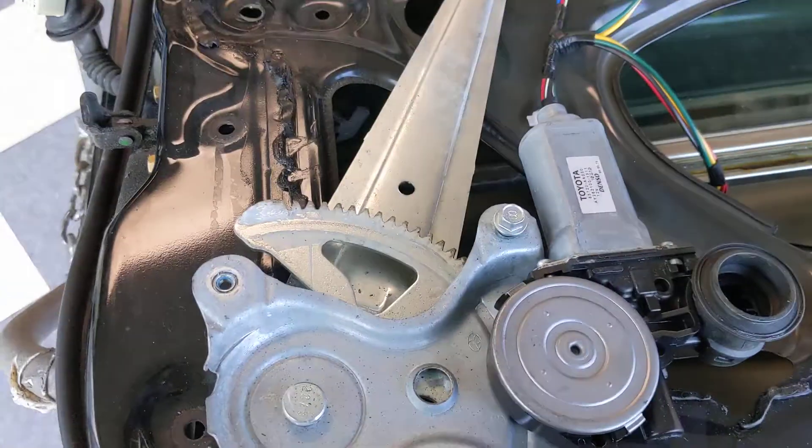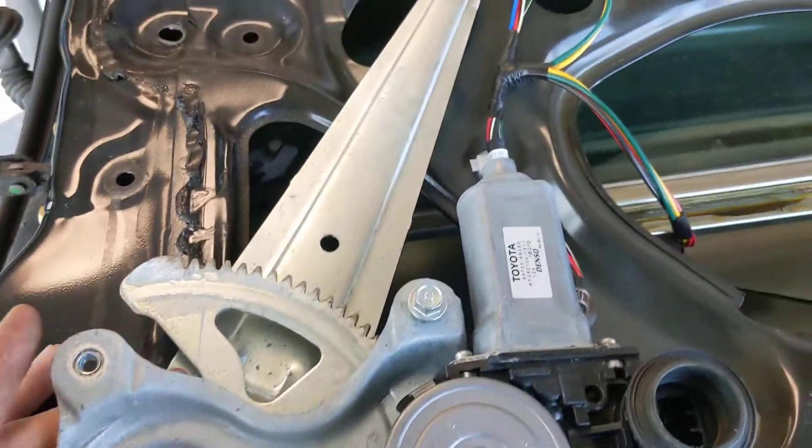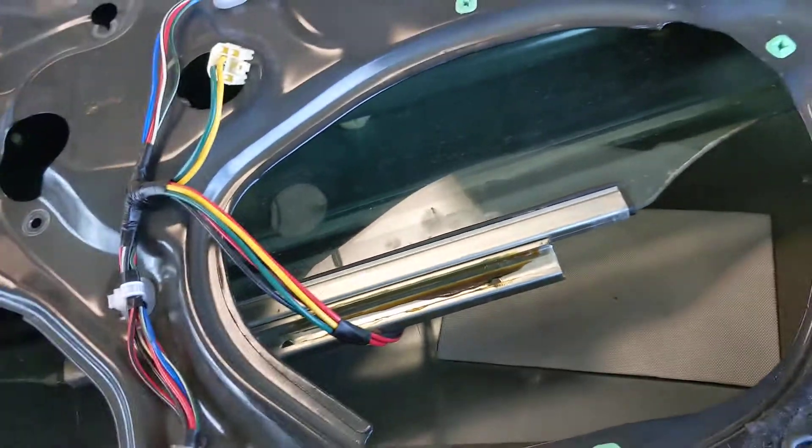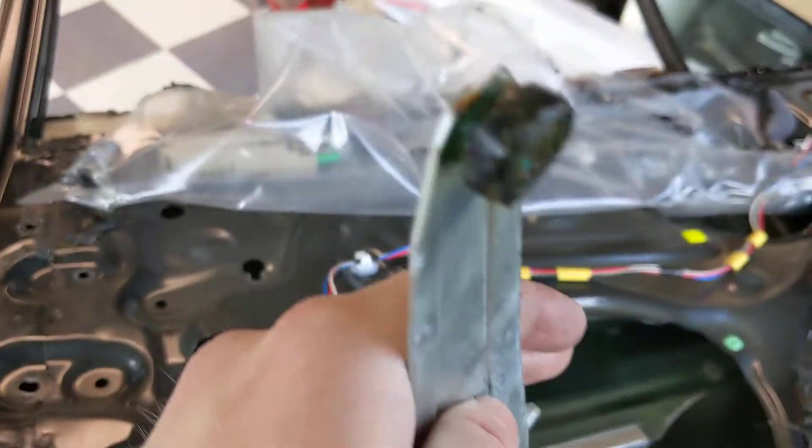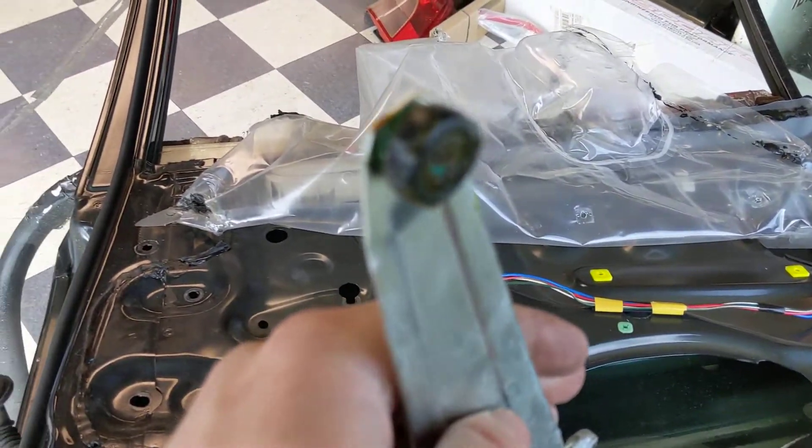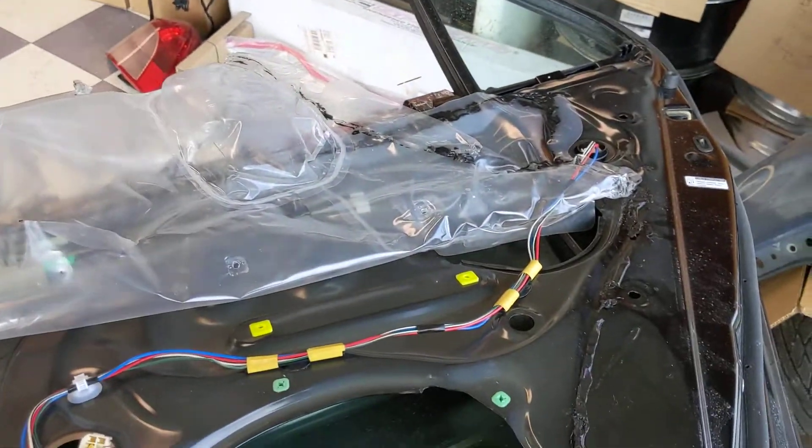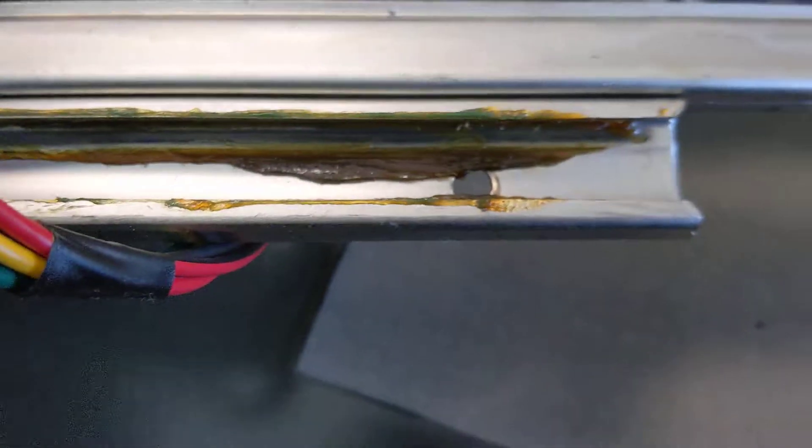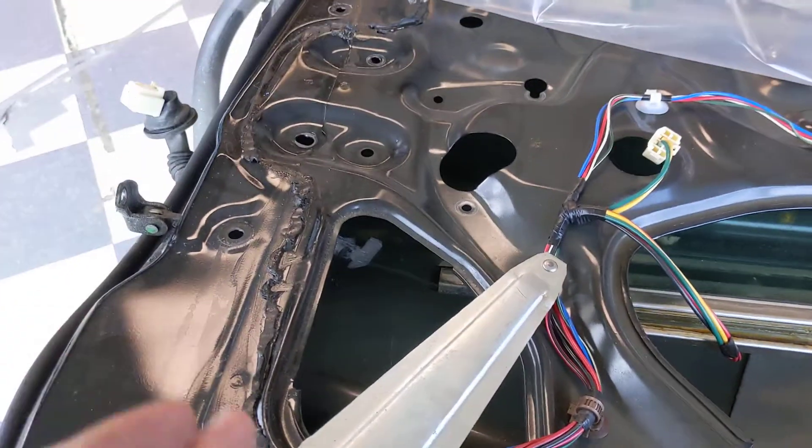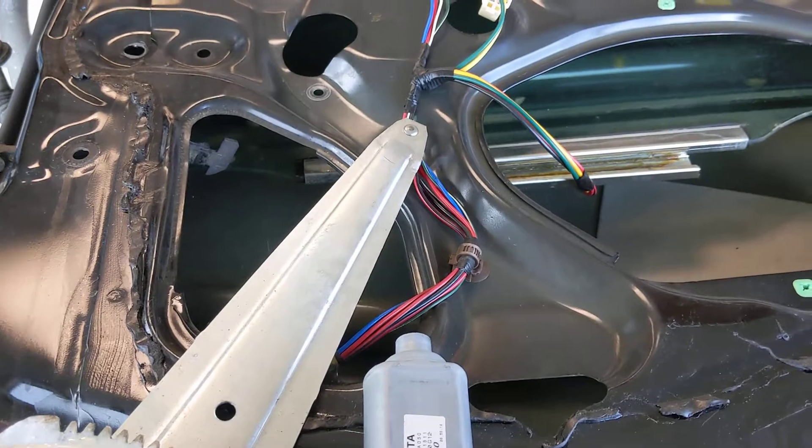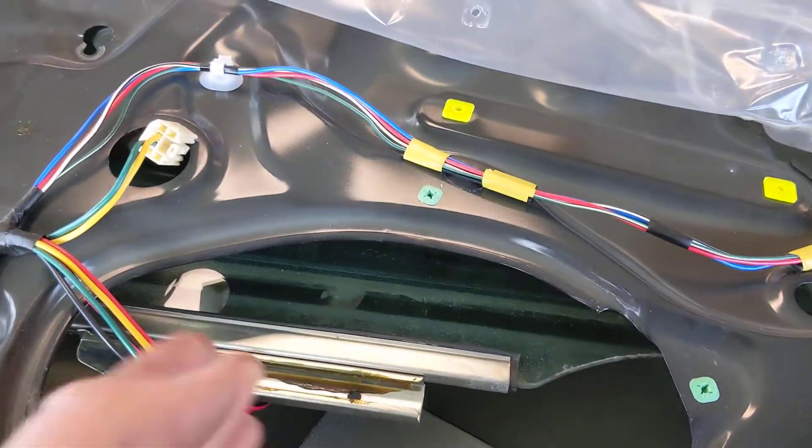So this is the way that your window motor and regulator are going to be setting in the door. This little circular wheel here, if I can get the camera to focus on it, that is what is going to be going right into this greased track right here. And that's what actually helps your window or pushes your window up and down. The way that this arm moves forward, like left and right or forward, up and down, that is what is going to push this window up and down.